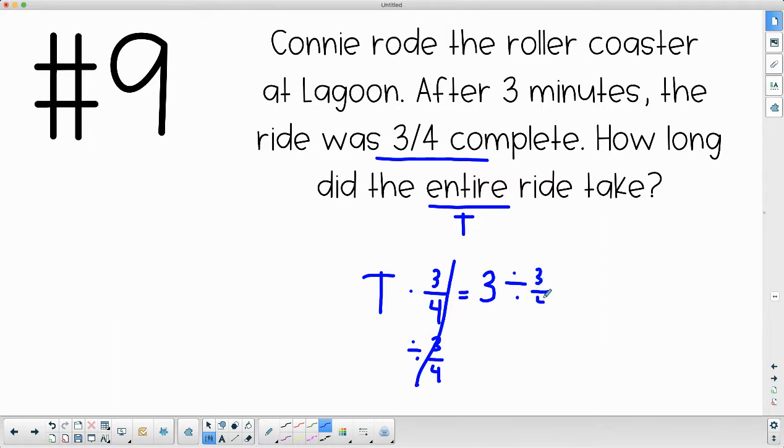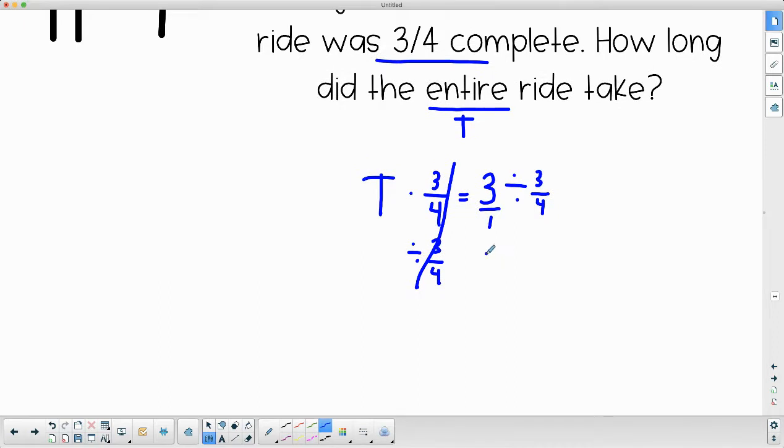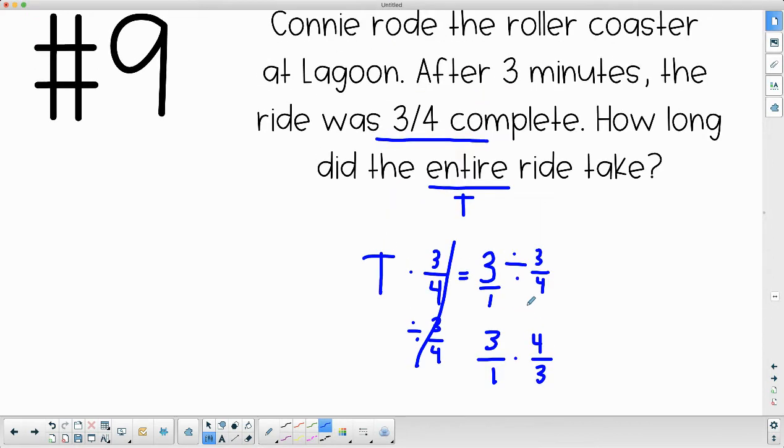So the opposite of times is to divide by 3/4. So if you remember, that cancels this out, and then I do the same thing to both sides of the equation. So 3 divided by 3/4, 3 is over 1. So we're going to copy, dot, and flop there. Then I can see the 3s can simplify here. And then I'll multiply my numerators and do any other simplifying that needs to be done.